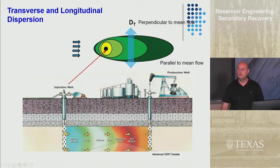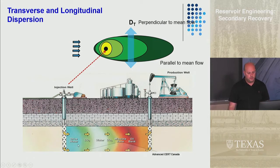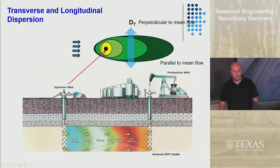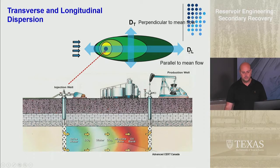Here's an example of where mixing and component transport is important. There's an injection well and a producer well. This is what's called a WAG — water alternating gas. You've got water followed by CO2, and the CO2 might mix with the water. You can have dispersion in the direction of flow — that's longitudinal (DL) — or mixing transverse to flow — that's DT, the transverse dispersion coefficient.